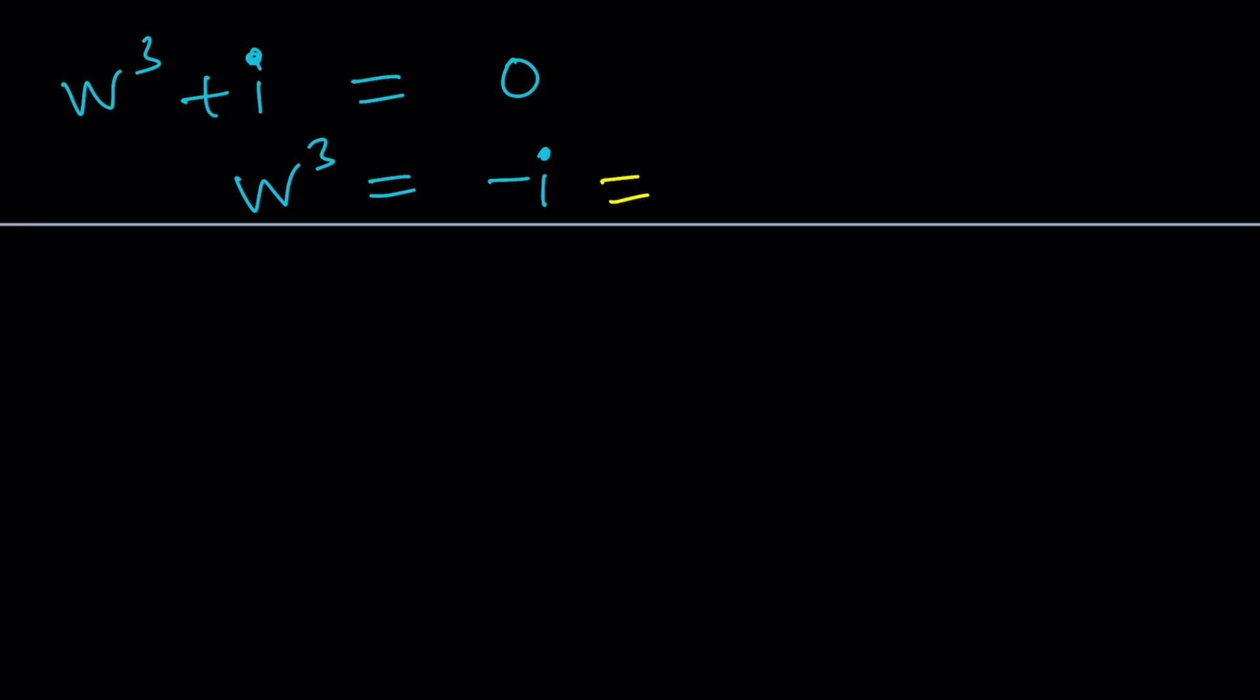You can write this in polar form e to the power i times pi. But of course you're allowed to add multiples of 2 pi to it, so we can write 2πn. By using different values for n we're going to get different values for w. This can be written as (2n+1)πi. So now w equals e to the power (2n+1)π divided by 3, times i. This is probably the easiest way to write it. And by the way we should not forget the i there, otherwise it's going to be a real number.